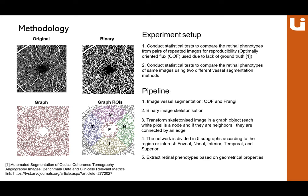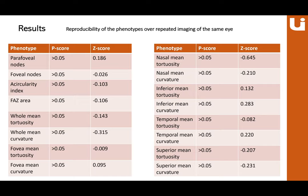For results: in the first part — reproducibility of phenotypes over repeated imaging of the same eye — the results are encouraging. All phenotypes passed the paired p-test, and z-scores were close to zero, indicating low variation across repeated images. This is very good to see.